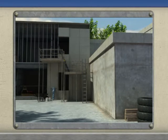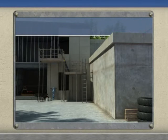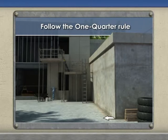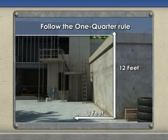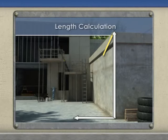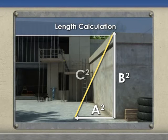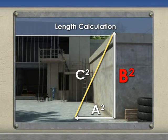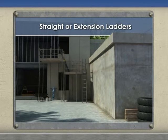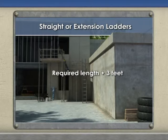Selecting a ladder of adequate length is one of the key factors in working safely on ladders. Follow the one quarter rule: the base of the ladder should be one foot away from the structure for every four feet of height to where the ladder rests against the structure. Calculate the length of the ladder using the formula a² + b² = c², where the horizontal distance squared plus the vertical distance squared equals the ladder length squared. Straight or extension ladders should be used at an angle and extend three feet above the upper support.